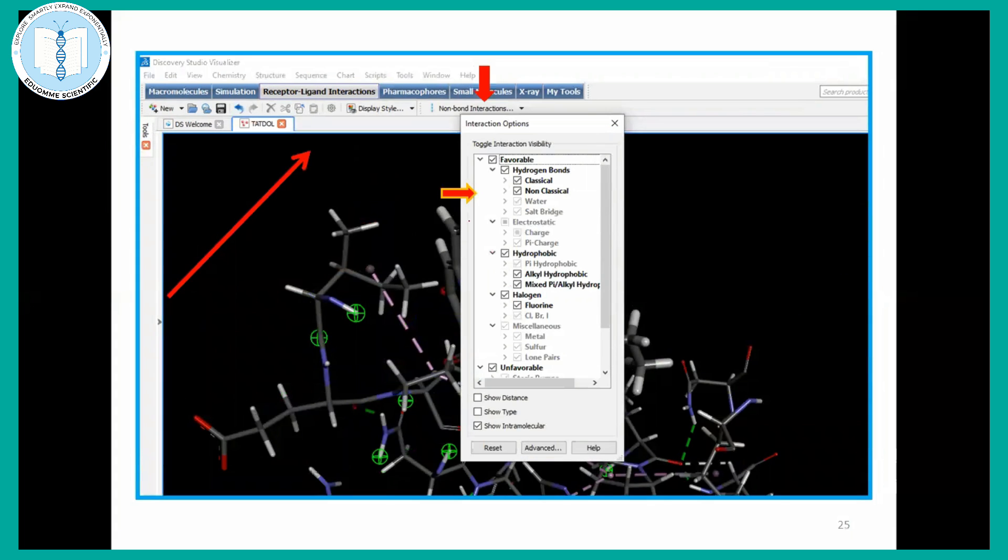And while performing these kinds of interaction visualizations and when you are making your file ready for publications, many a time, you just have to go to this non-bond interaction. Whether your focus is on classical hydrogen bond or which kind of bond interaction you want to highlight in your studies, that also can be achieved from this section. You just have to go to non-bonded interaction and from there, you can do these things.